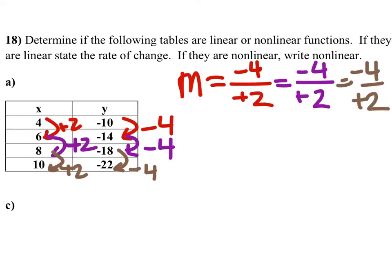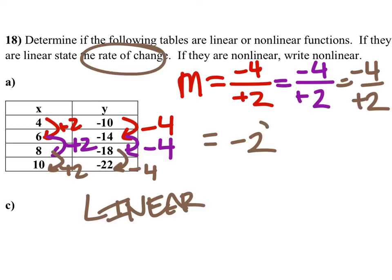But ultimately, their values are each negative 2. So this one is linear, and the rate of change for this is negative 2.